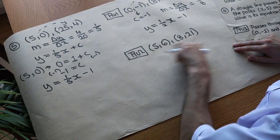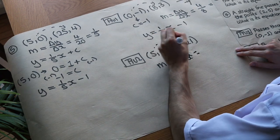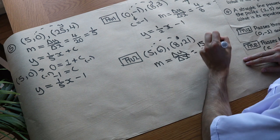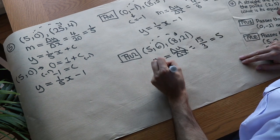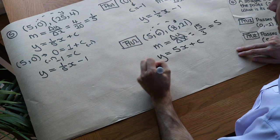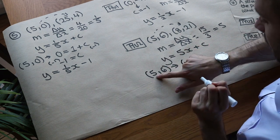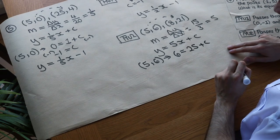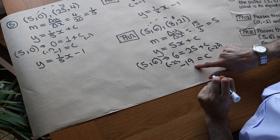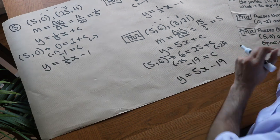For the second, harder question — we don't have the y-intercept. First find the gradient: change in y over change in x. From 6 to 21 is adding 15, and from 5 to 8 is adding 3. So m equals 15 over 3, which is 5. We write y equals 5x plus c and choose the point 5, 6: y is 6, so 6 equals 5 times 5 plus c, giving 6 equals 25 plus c. Subtract 25 from both sides: c equals minus 19. So the equation is y equals 5x minus 19. Well done if you got that right.